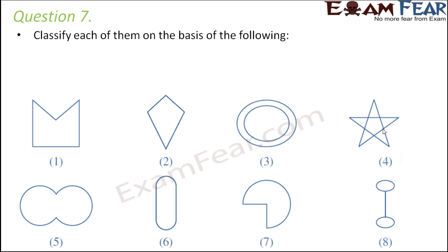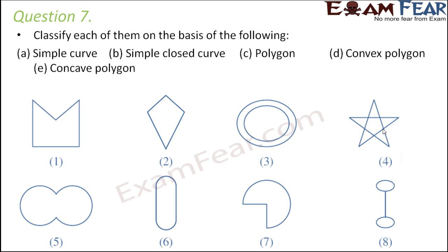Question number 7. Classify each of them on the basis of: simple curve, simple closed curve, polygon, convex polygon, and concave polygon. Let us see how many of these are simple curves. Simple curves are those curves which do not cross themselves — the curve should not cross itself.